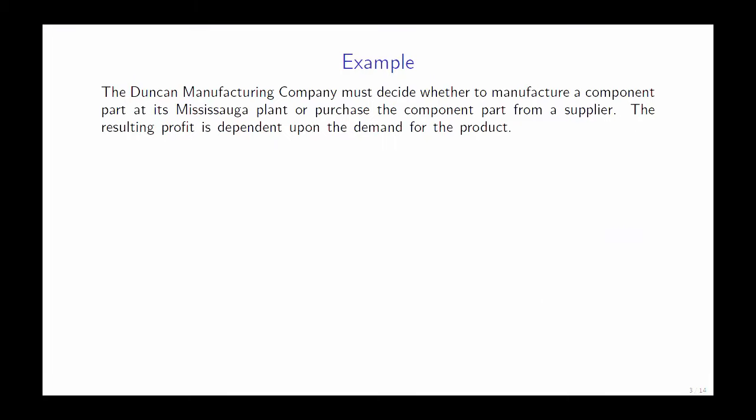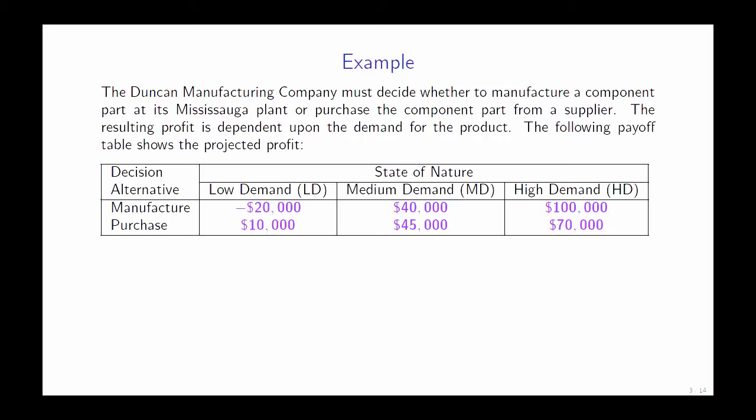Let's look at our first example. The Dunkey Manufacturing Company must decide whether to manufacture a component part at its Mississauga plant or purchase the component part from a supplier. The resulting profit is dependent upon the demand for the product. The following payoff table shows the projected profit.